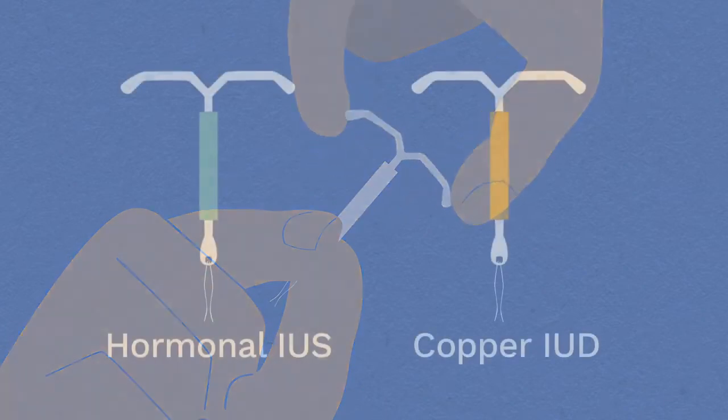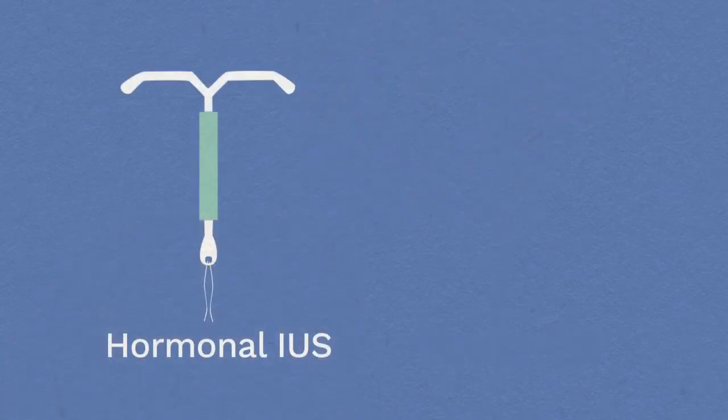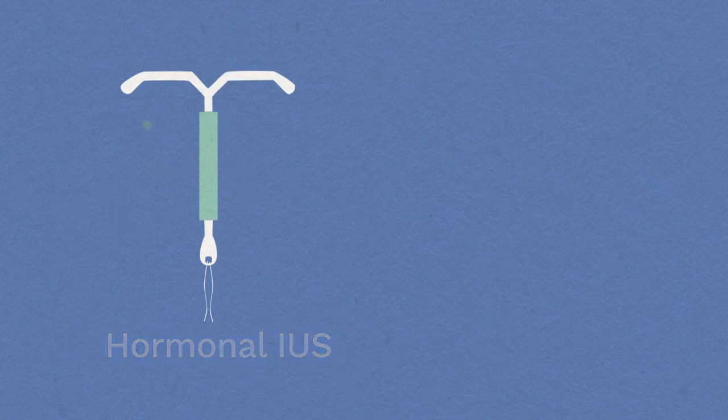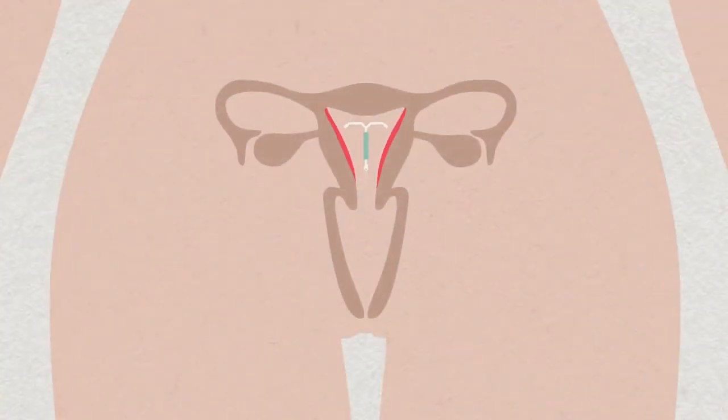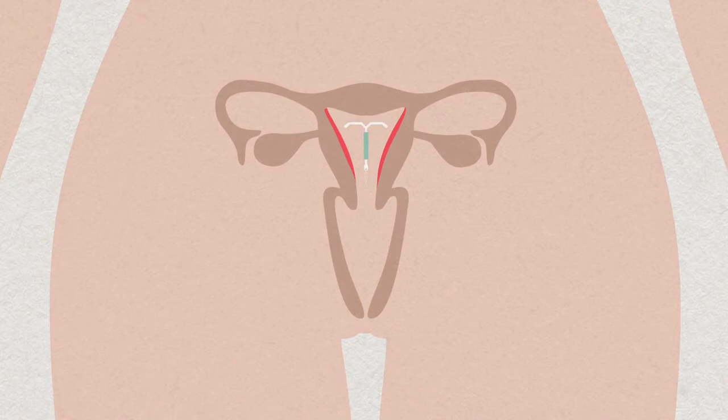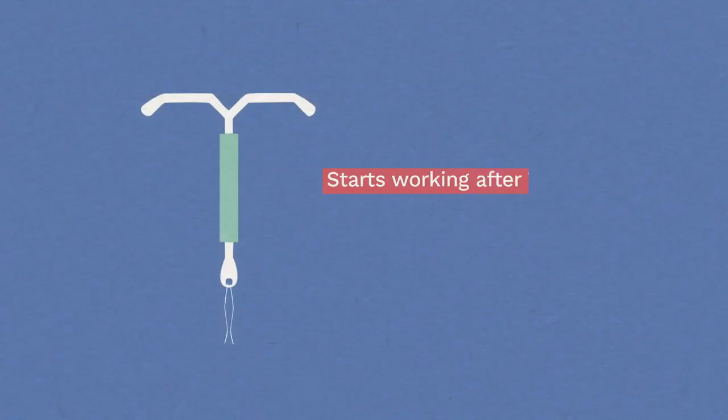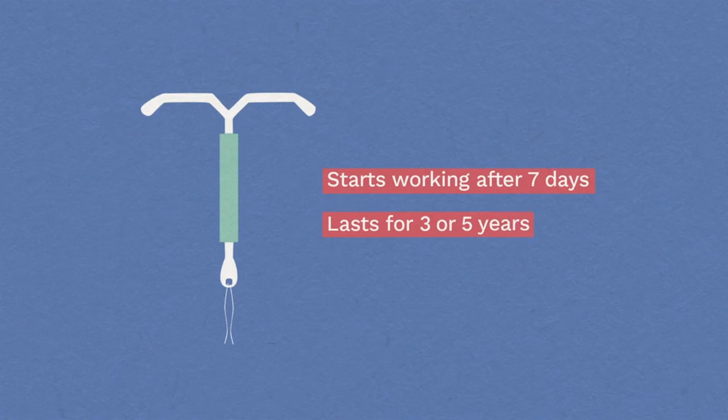The hormonal IUS works by releasing a tiny amount of a hormone called progesterone, much less than the pill releases. The progesterone thins the lining of the womb, which prevents a pregnancy from settling there. It also thickens the mucus in the cervix, stopping sperm getting in. The hormonal IUS takes 7 days to be effective, and lasts up to 5 years, or longer if you are over 45.